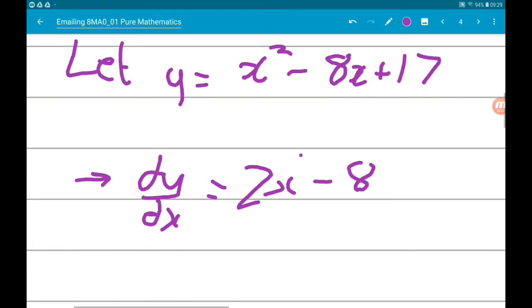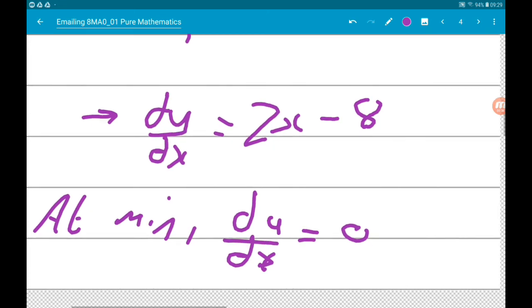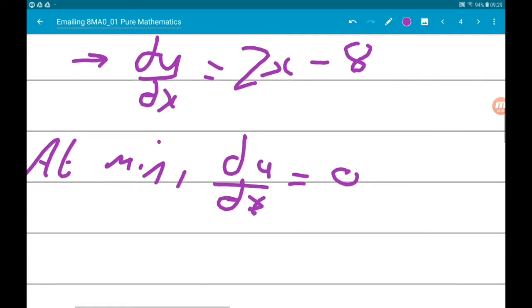Now, at a minimum, dy by dx is equal to 0. So we set 2x minus 8 is equal to 0.